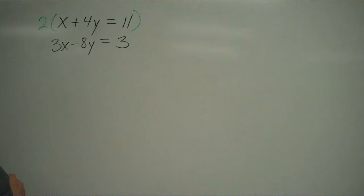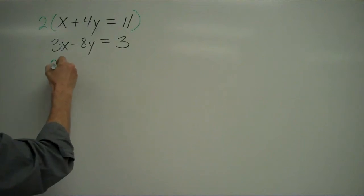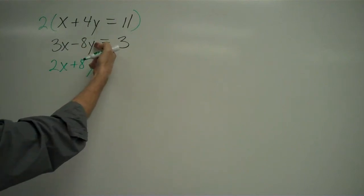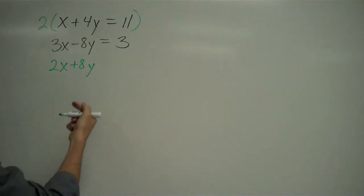Well, it's because when I multiply 2 times x I get 2x. When I multiply 2 times 4y I get plus 8y. Now you see that when I add this to this, my y's are going to cancel out.